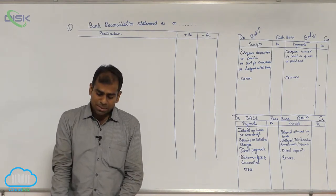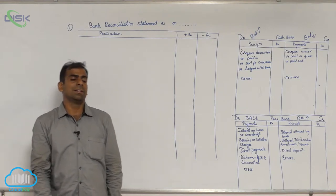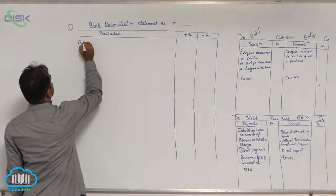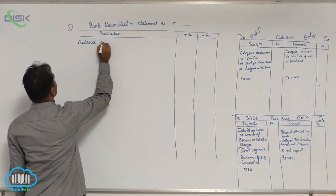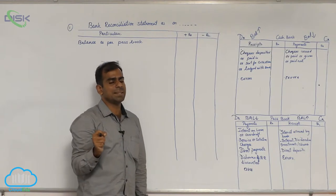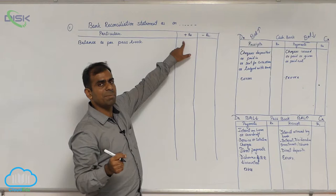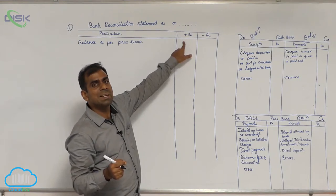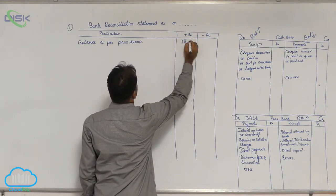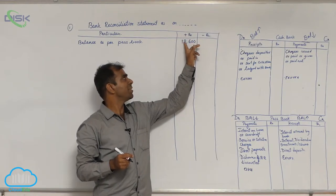Problem number one: the pass book of a trader shows a balance of twelve thousand six hundred. Since you are given the pass book balance, the first entry in the particulars column is 'Balance as per Pass Book.' Whenever it is a favorable balance, enter the amount in the plus column. So twelve thousand six hundred goes into the plus column.